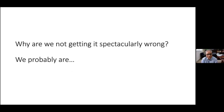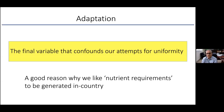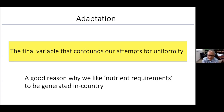I've been dissing the whole system and saying we're all wrong — so why aren't people falling over because dietitians have it totally wrong? Well, we are getting it wrong, but there's an important part of us called adaptation. We adapt to the diets we eat. It's a final variable that confounds our attempts for uniformity — if you give someone the average diet, they may actually become that average in their requirements. That's why nutrient requirements should be measured separately in India and separately in the US, because adaptation differs.